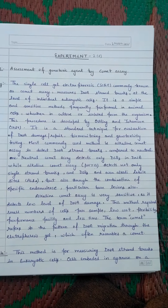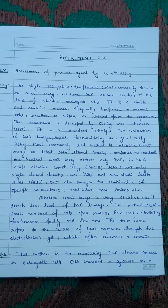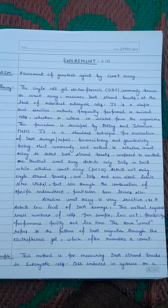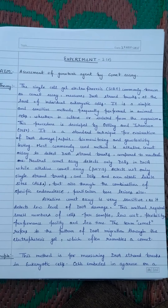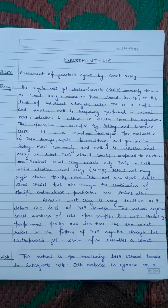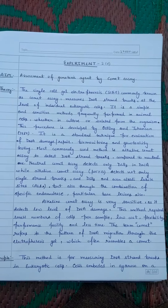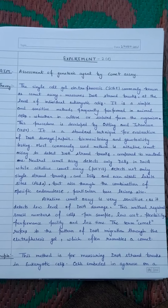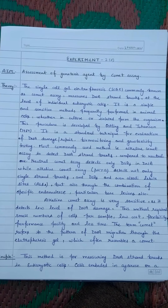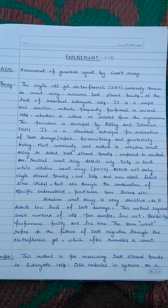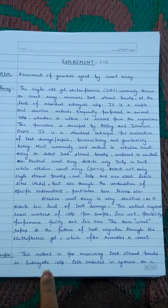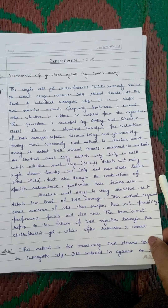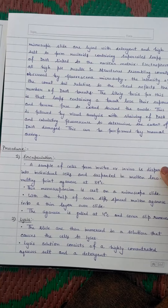The term 'comet' refers to the pattern of DNA migration through the electrophoresis gel, which often resembles a comet. Normally in electrophoresis, the DNA sample migrates towards the anode because DNA is a negatively charged biomolecule, so it moves towards the positive charge. Here we do the same but for a single cell. The principle of this method is that it is mainly used to measure DNA double strand breaks of eukaryotic cells.